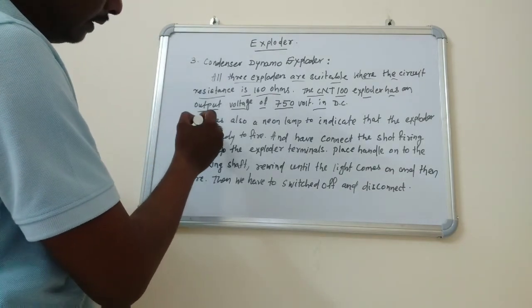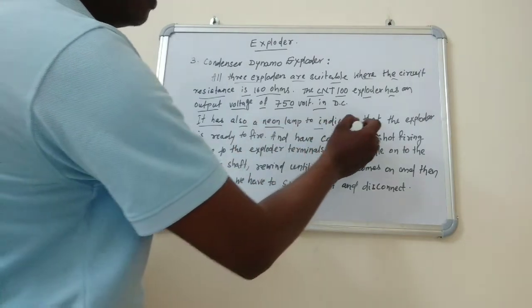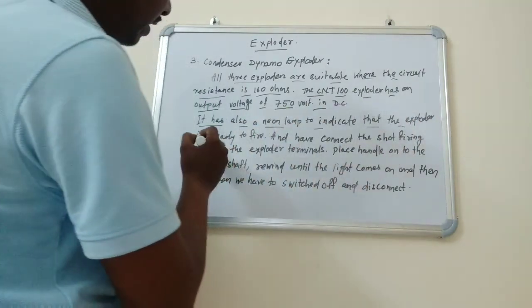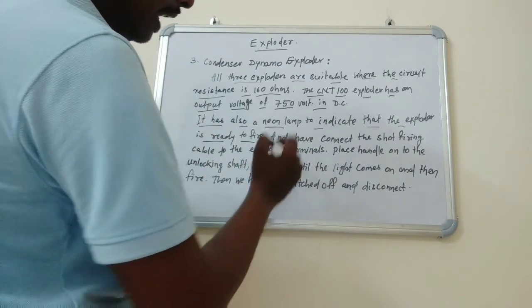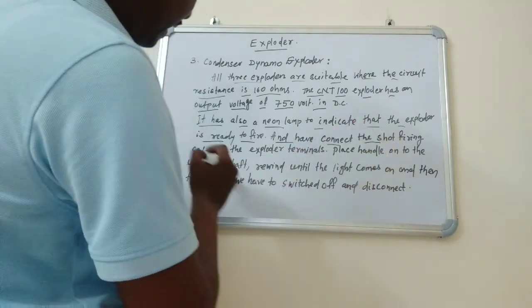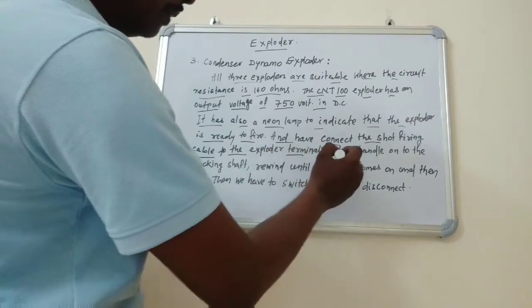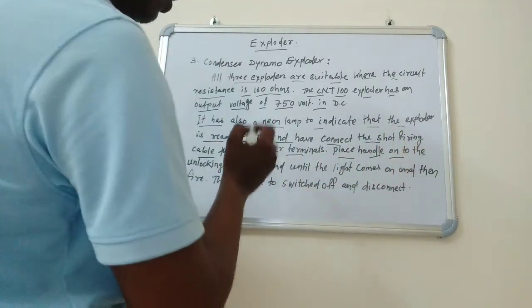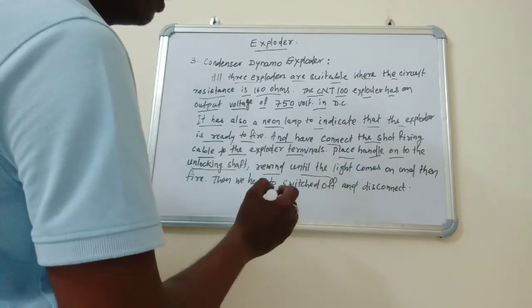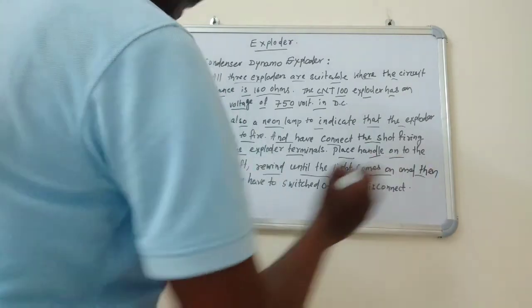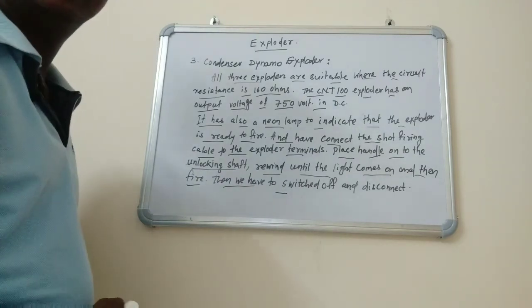It has a neon lamp to indicate that the exploder is ready to fire. Connect the shot firing cable to the exploder terminals, place the handle on to unlock the shot, rewind until the light comes on, and then fire. Then switch off and disconnect.